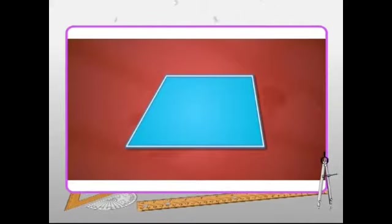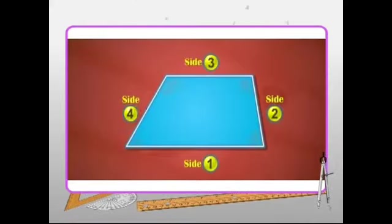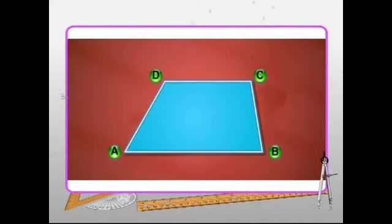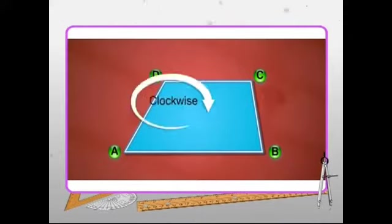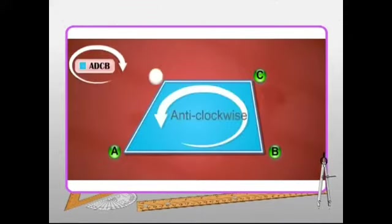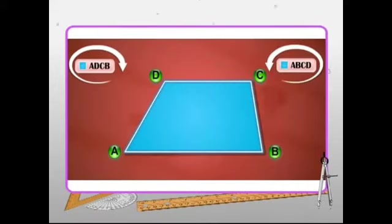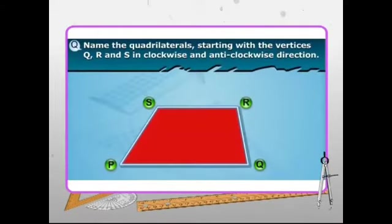So the word quadrilateral translates to four sides. To elaborate, a quadrilateral is a plane mathematical figure with four sides and four angles. A quadrilateral is named by taking the vertices in order, either in clockwise or in anti-clockwise direction.